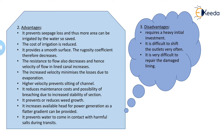There are various advantages of canal lining. First, it prevents seepage loss, and thus more area can be irrigated with the water saved, so the cost of irrigation is reduced. Second, it provides a smooth surface, so the rugosity coefficient decreases. That means the friction developed between the water surface and the boundary surface is reduced. The resistance of flow also decreases, and hence the velocity of flow in the canal increases.